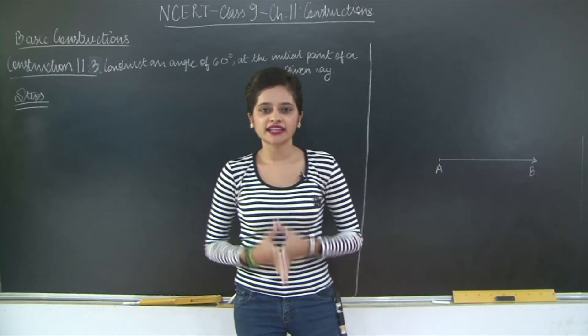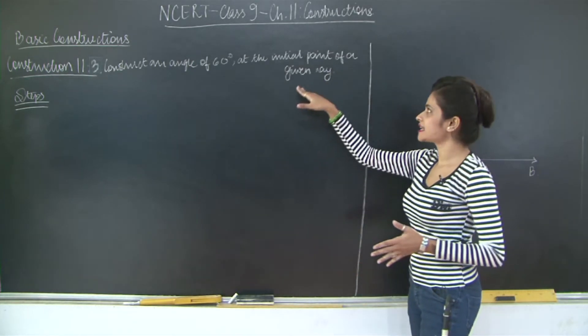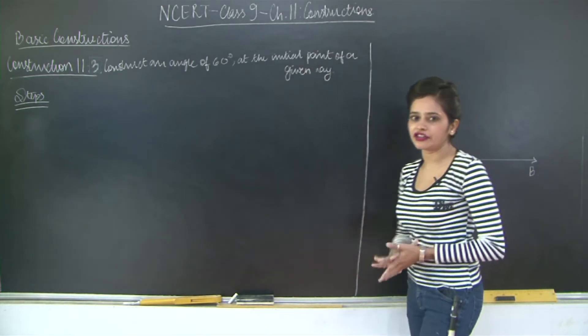Hello students, let us take a look at the third basic construction: to construct an angle of 60 degrees at the initial point of a given ray.